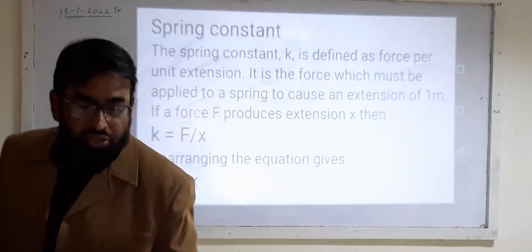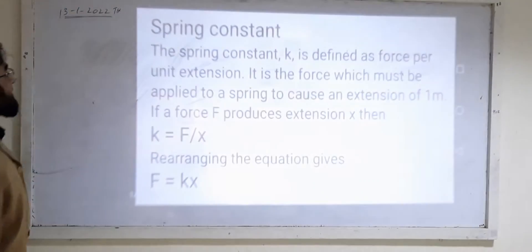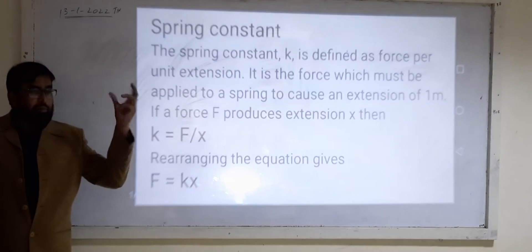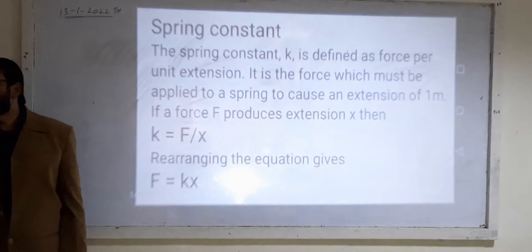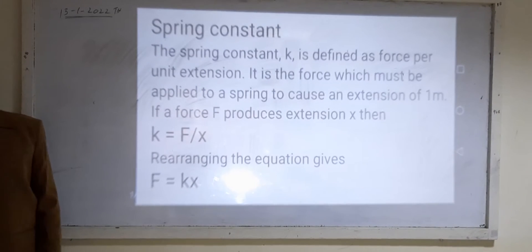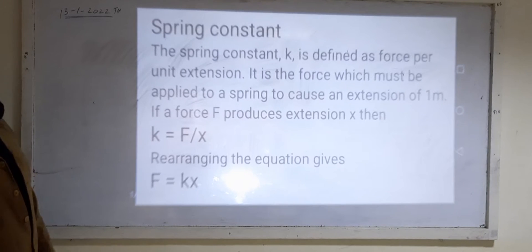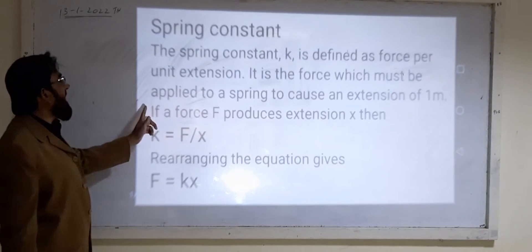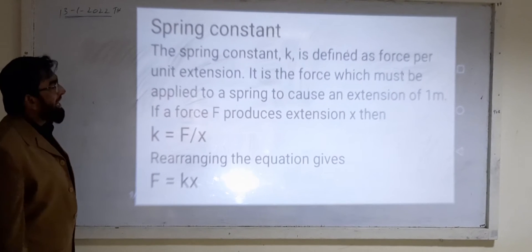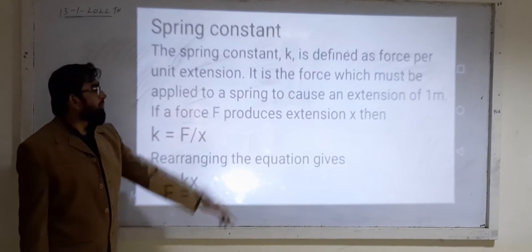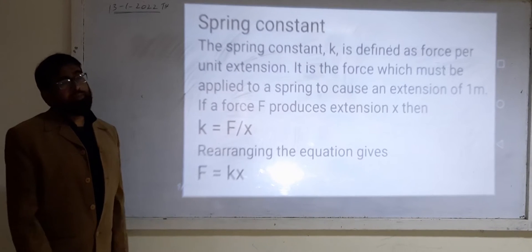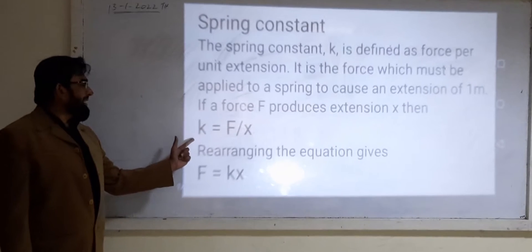K is called the spring constant and its value depends upon the material of the spring, its diameter, and the thickness of the wire with which the spring is made. The spring constant K is defined as the force per unit extension — it is the force which must be applied to a spring to cause an extension of one meter. If a force F produces an extension x, then K is equal to F over x.